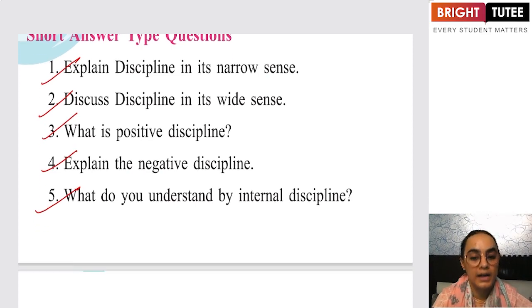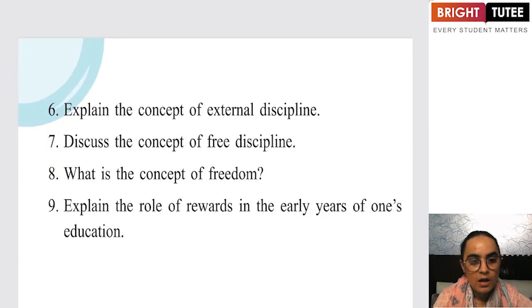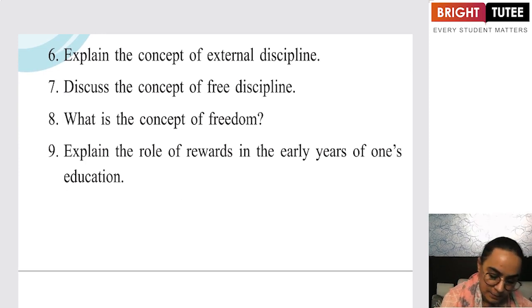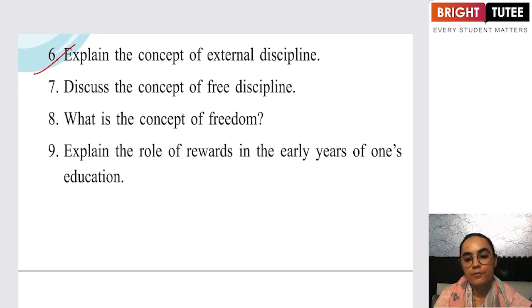What is external discipline? External discipline refers to the imposition of some external factors. External commands are given to you in order to extract a disciplined behavior.